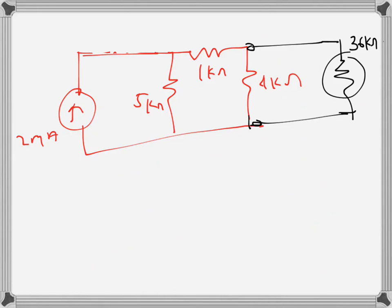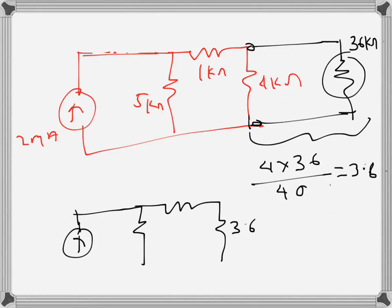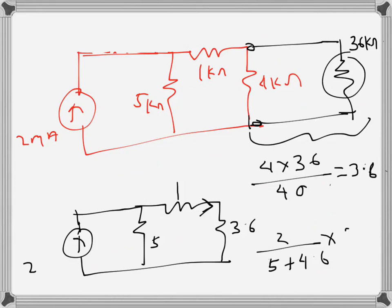The parallel combination of 4 and 36 is 4 times 36 over 4 plus 36, which equals 3.6 kilo ohms — much closer to 4 kilo ohms than before. The total resistance in the branch is now 5 plus 1 plus 3.6, giving 9.6 kilo ohms. The current entering this branch is 2 over (5 plus 4.6) times 5, which equals 1.04 milliamps.